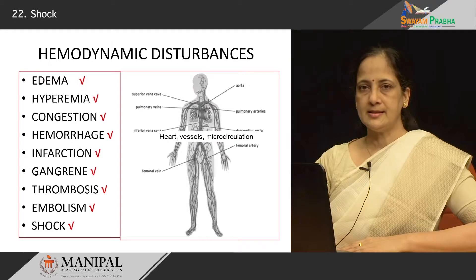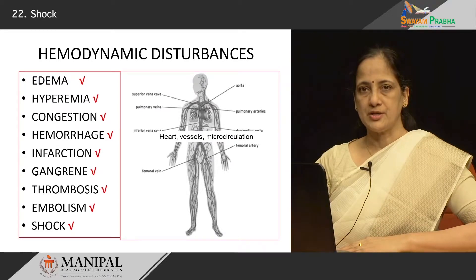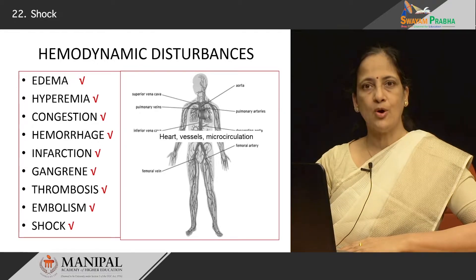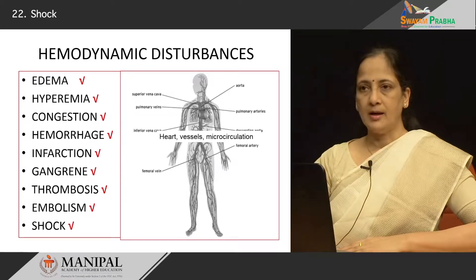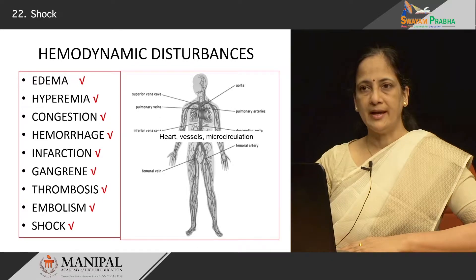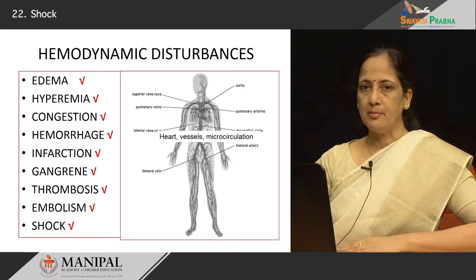In these series, we look at disturbances in circulation, be it at the level of the heart, in the arteries, arterioles, microcirculation, venules or veins. Under this chapter, we have seen a couple of other topics like edema, hemorrhage, infarction, gangrene, embolism.